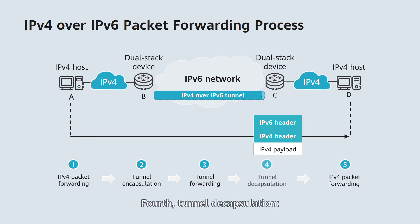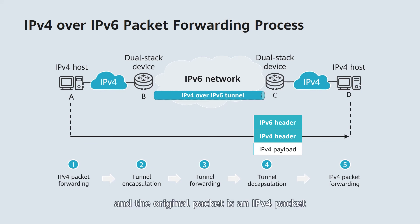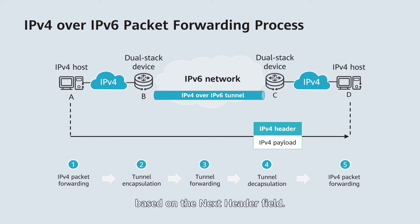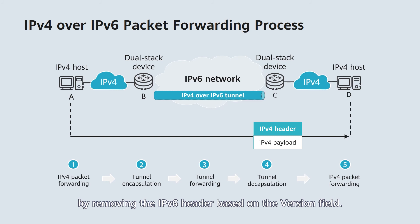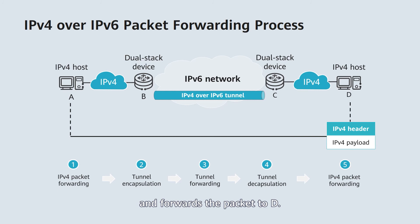Fourth, tunnel decapsulation: upon receipt of the IPv6 packet, C discovers that the destination address is its own address, and the original packet is an IPv4 packet based on the next header field. It then decapsulates the IPv6 packet by removing the IPv6 header based on the version field. Fifth, IPv4 packet forwarding: C searches its IPv4 routing table for an entry matching the destination address of the IPv4 packet and forwards the packet to D.